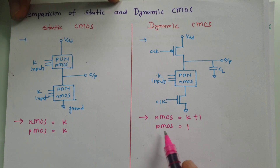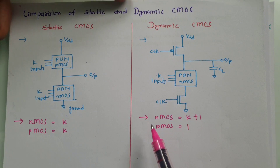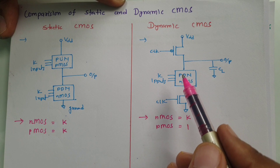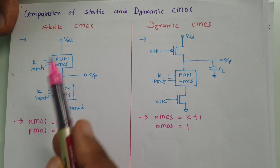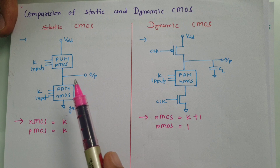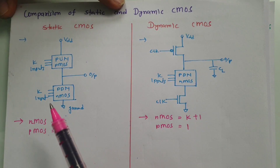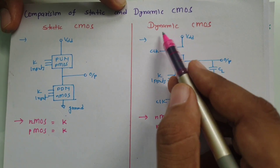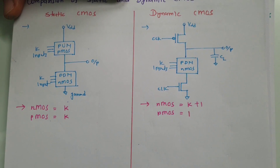The total number of transistors is less in dynamic CMOS, and the major effect is due to PMOS. Since PMOS size is larger, static CMOS has a larger overall circuit size. In dynamic CMOS, only one PMOS is present, so the size of the dynamic CMOS circuit is smaller.